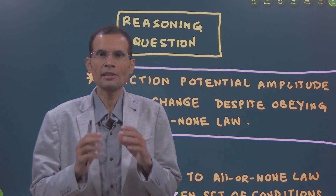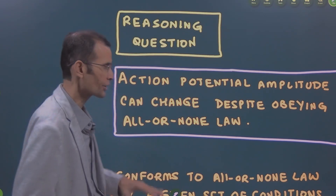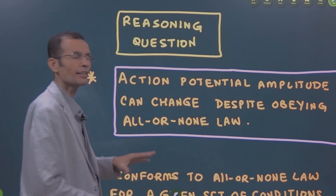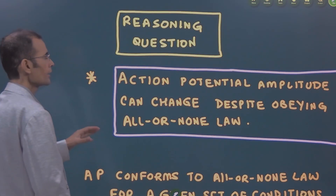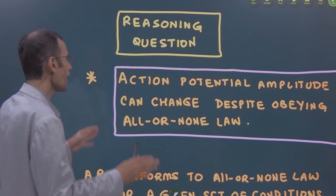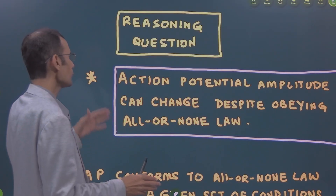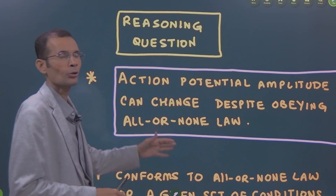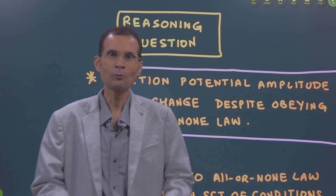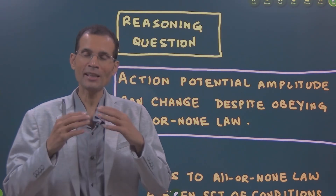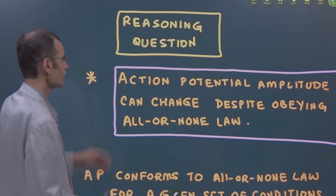Hello friends, this is a reasoning question. Let's see the question and let's understand the concept behind it. Action potential amplitude can change despite obeying the all or none law. Explain why, explain how. Let's understand.